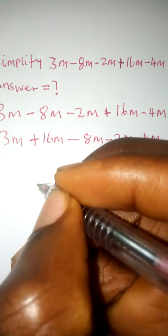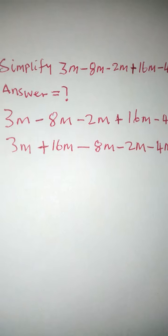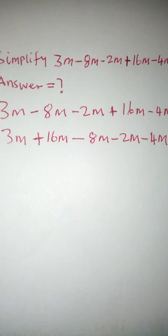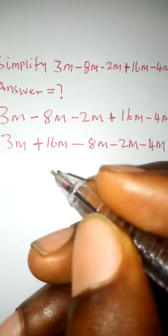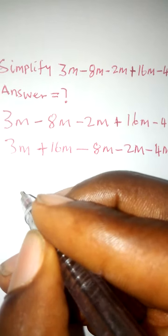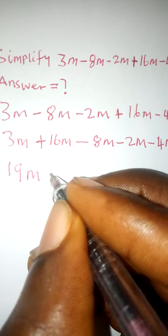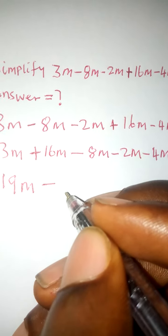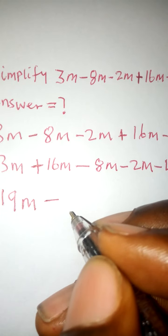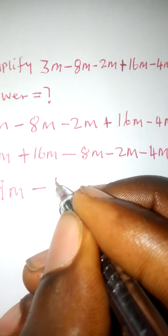So now, looking at this carefully, we have a symbol. You can see that I have moved the positive sign to the left. So let's say 3 plus 16 gives you 19. Then I have minus 8 minus 2 which is 10, and minus 4 which is 14.